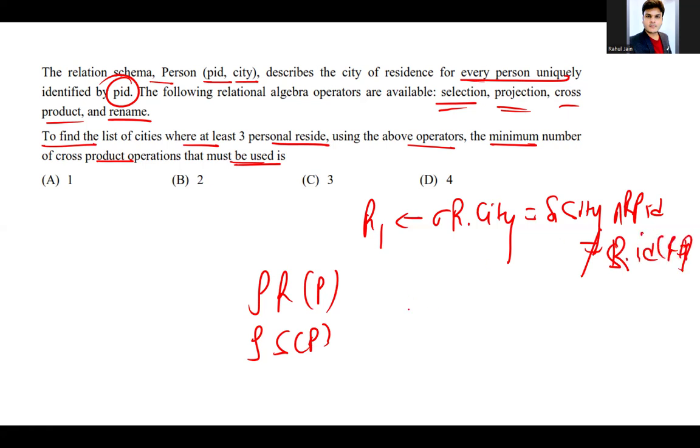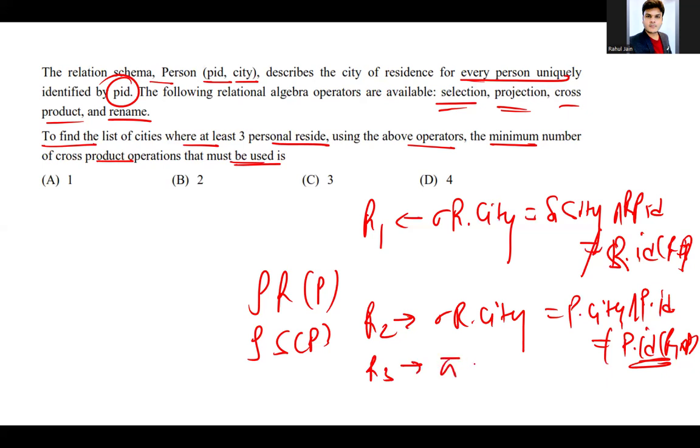So one product is required here. And for R2, where sigma of R dot city equals person dot city and person dot ID should not be equal to person ID, R1 cross P will be required. So two products will be required, and R3 should be pi of city R2.